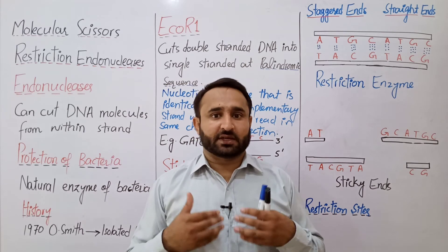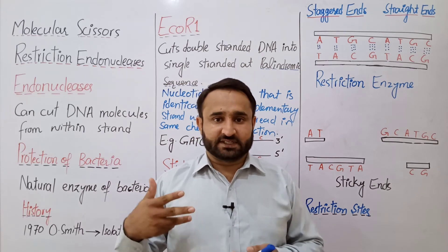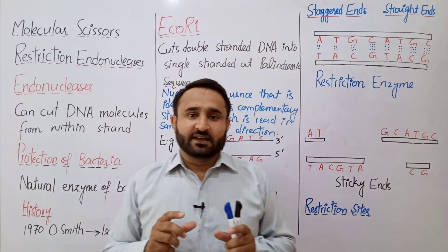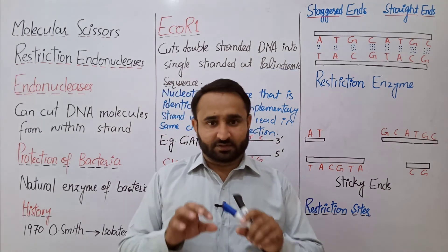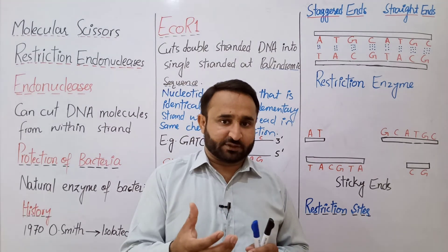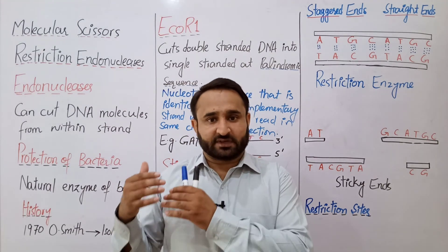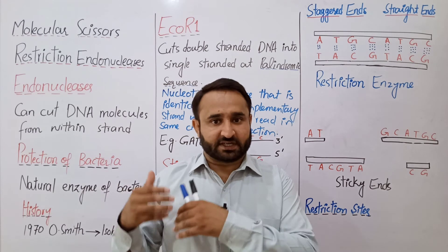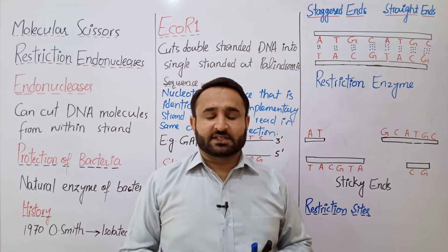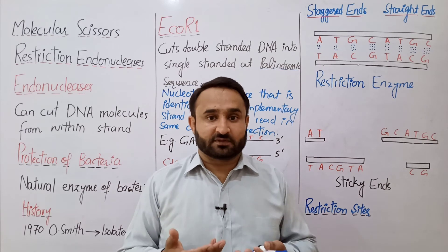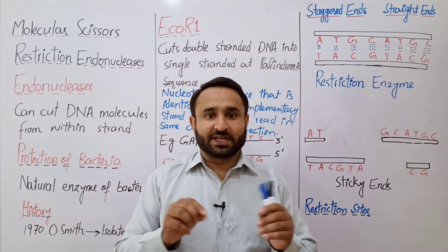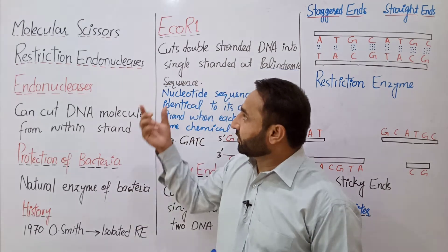Restriction endonucleases are also called molecular scissors because they can cut DNA molecules. Basically, restriction endonucleases are those enzymes which can cut a double-stranded DNA molecule into single-stranded DNA molecules from a specific sequence, which is called a palindromic sequence or restriction site. We will learn what a palindromic sequence is as we go further.